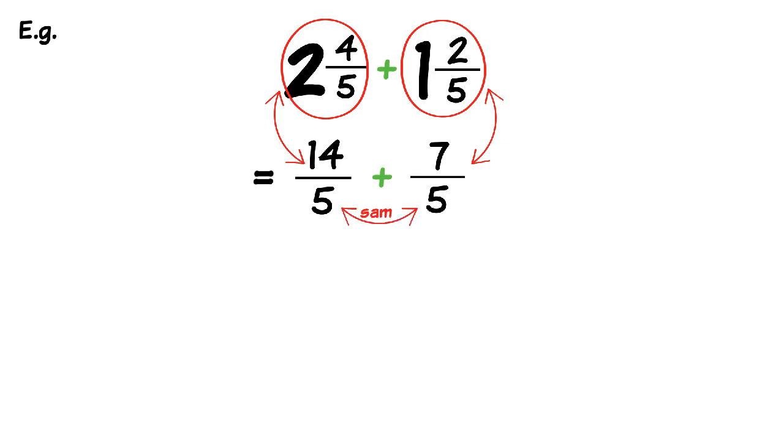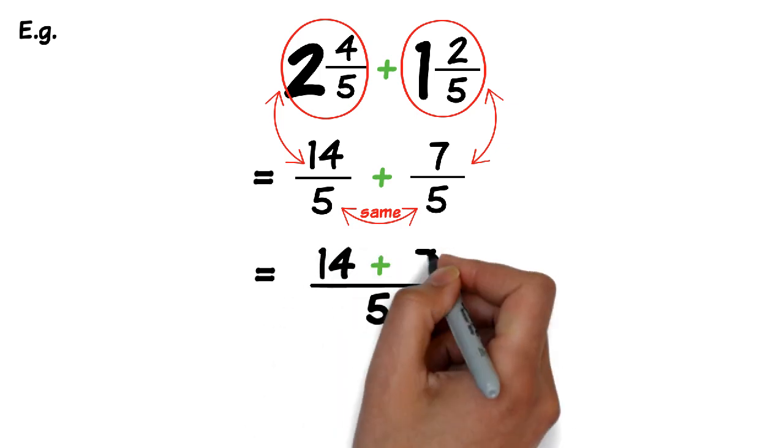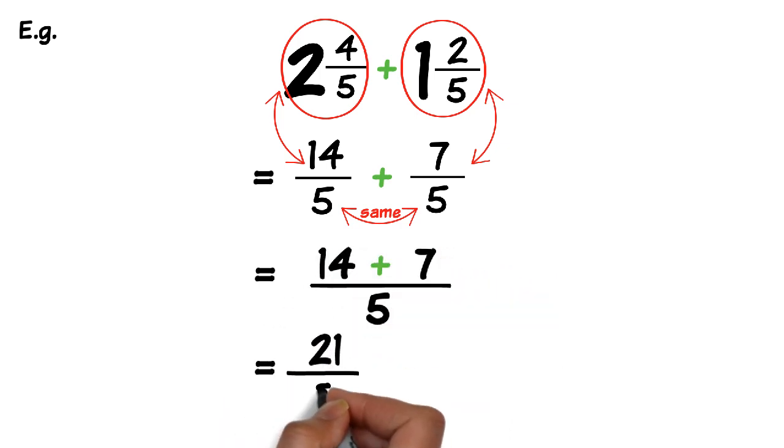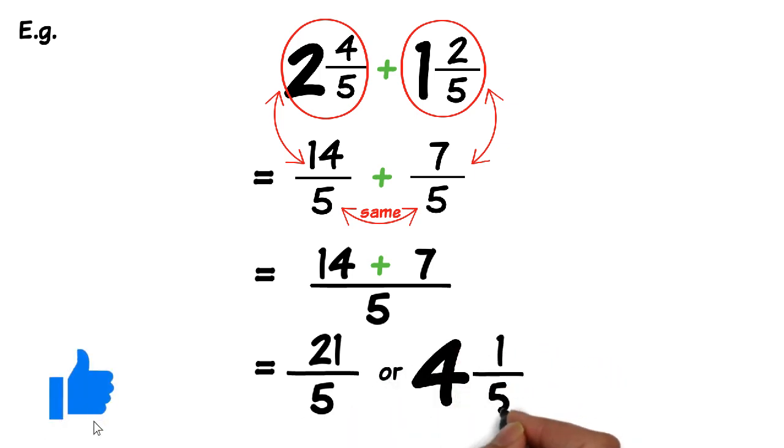Now since the denominators are the same, that becomes our new denominator again. Over 5. And for the new numerator we just add 7 to 14. So 14 plus 7 equals 21. So the new fraction becomes 21 over 5. Or as a mixed number 4 and 1 fifth.